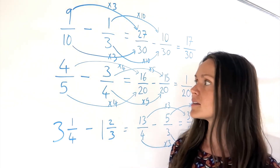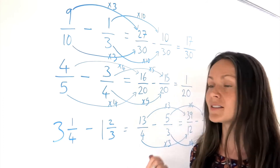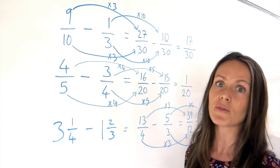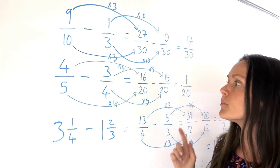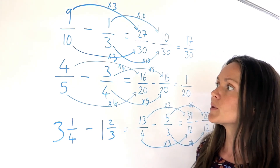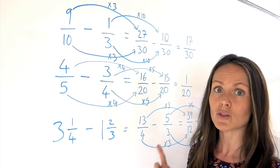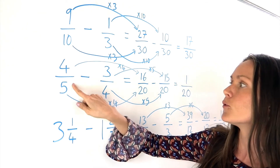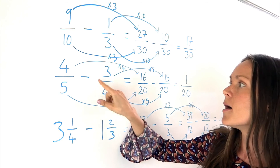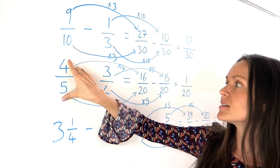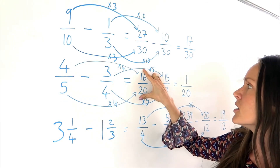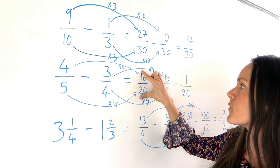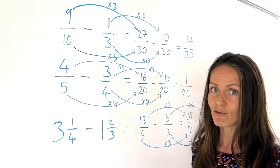Something important about subtracting that's different from addition: when we're adding, the order of the fractions was not important. But when we're subtracting, you have to be careful that you don't change the order. For example, in this one here, we're doing four fifths minus one quarter — make sure that fraction stays as the first fraction. Don't write it the other way around, otherwise you're going to get the wrong answer.